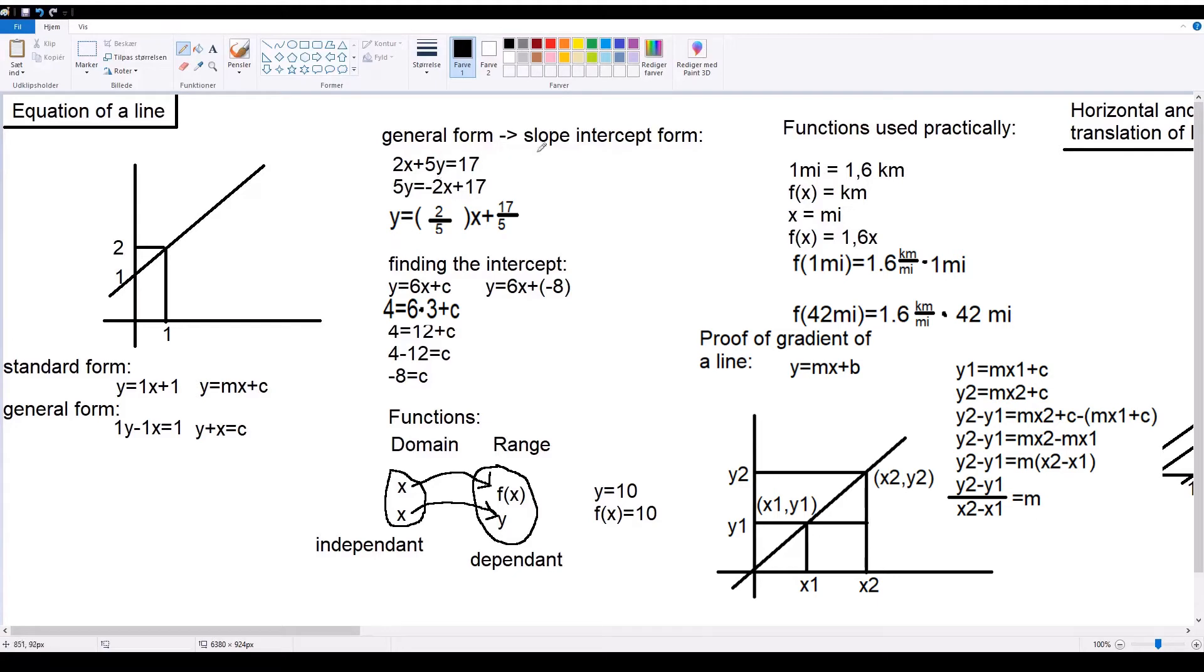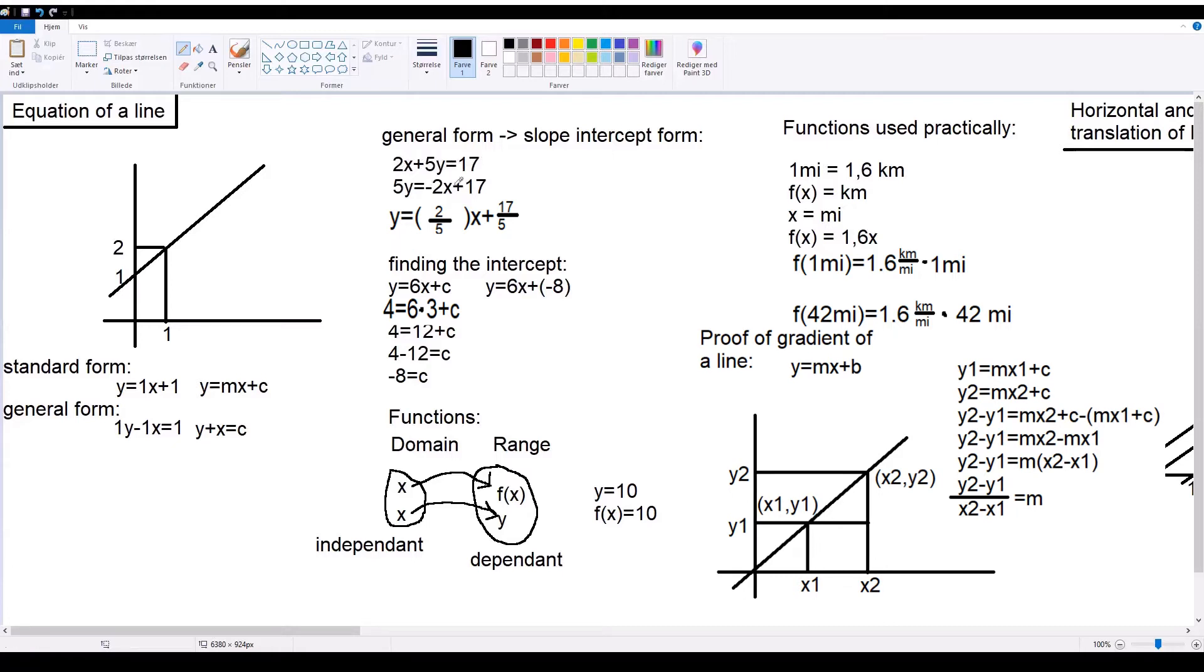You can change between this general form and the slope-intercept form by doing this. What you want to do is isolate y in your formula. So, what you do here in this example is, you have 2x plus 5y equals 17.